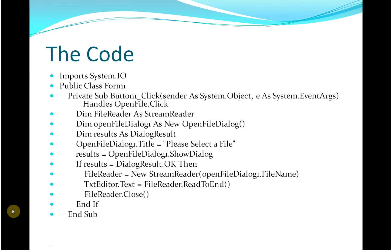There's the reading bit. I've declared a file reader as StreamReader. I've declared an OpenFileDialog one as a dialogue, and the result is what I get from the dialog result. The title is 'Please select a file.' Result is OpenFileDialog one dot ShowDialog — that's the one I select. If I've clicked OK, file reader is new StreamReader, OpenFileDialog one dot filename — open the file that I've highlighted. And text editor dot text reads everything to the end. I exit the file reader, close the if, and close the sub.